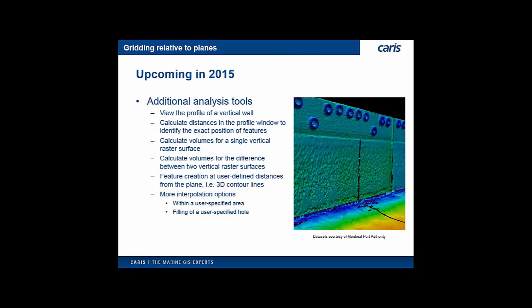However, our currently released tools are just the beginning of our support. This year, in 2015, we are adding yet more analysis tools, including the ability to create profiles of raster surfaces representing vertical walls. We will also add distance measuring tools to the profile window to identify the exact location of features. We will be adding volume calculations, both for single raster surfaces and also for the difference of two raster surfaces of vertical walls. 3D line features will be able to be created for contours at fixed distances from the planes, and we will be adding additional interpolation options. I think it will be really interesting once people get a chance to play around with the new tools and use them in production to see what additional functionality and capabilities they will be looking for. Absolutely. I look forward to hearing from our users as they try out and use these tools in production.